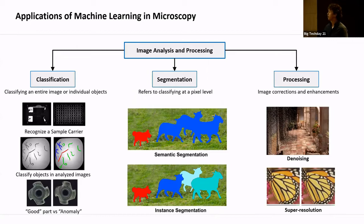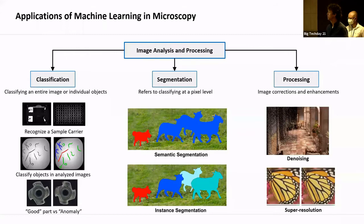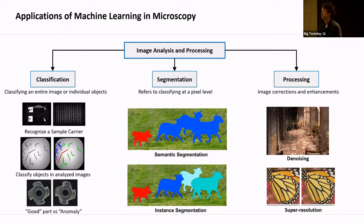Our main application in microscopy has to do with image analysis and image processing. There are three main areas: classification, segmentation, and processing. Those are about 90% of what our customers use AI for in microscopy. We also use it for finding the sample, classifying objects, detecting defects, and processing tasks like removing noise or improving image resolution — all done by AI solutions to some degree. Most importantly for microscopy, I would say, is the segmentation work.